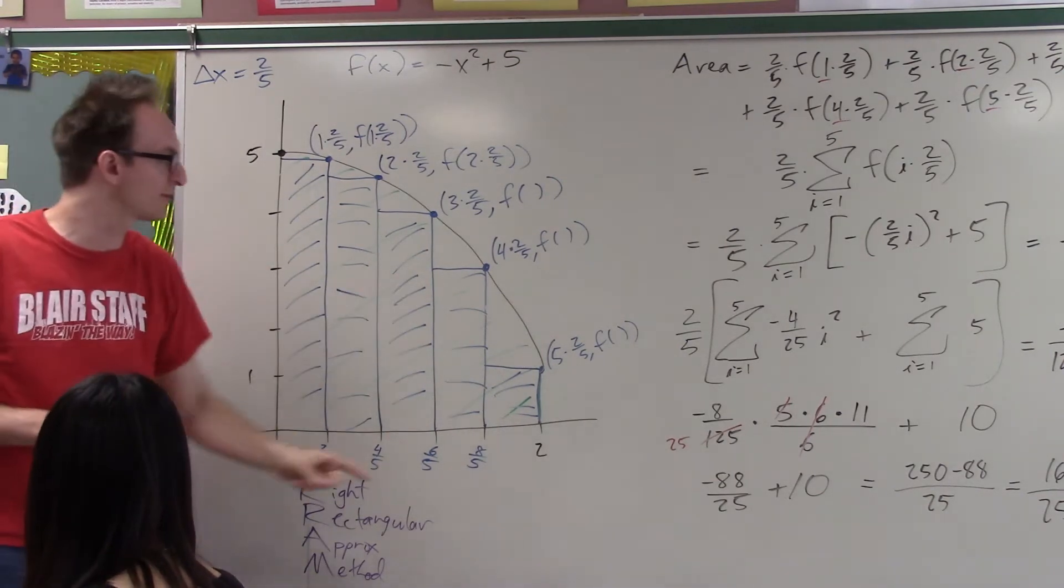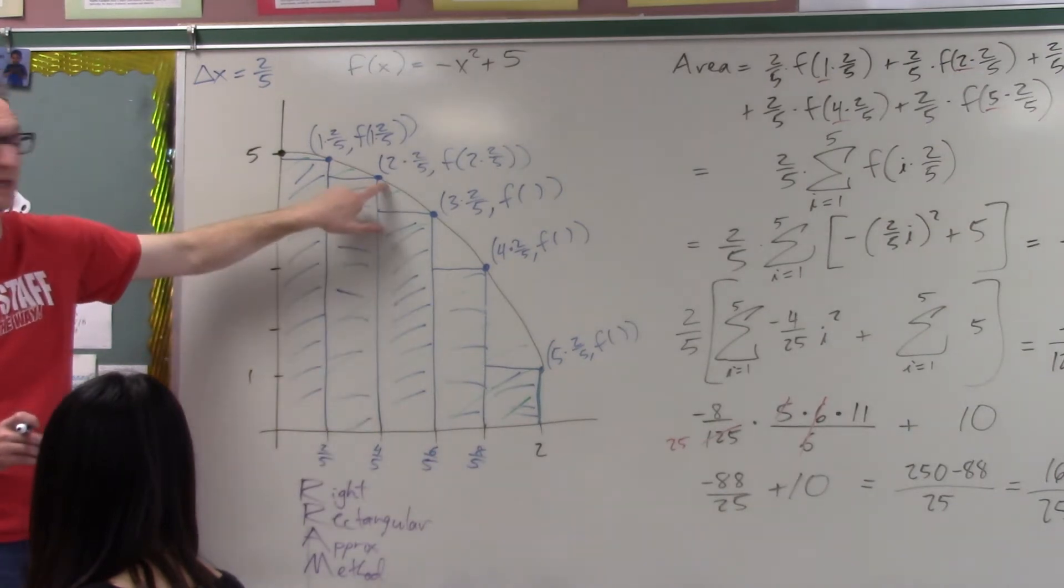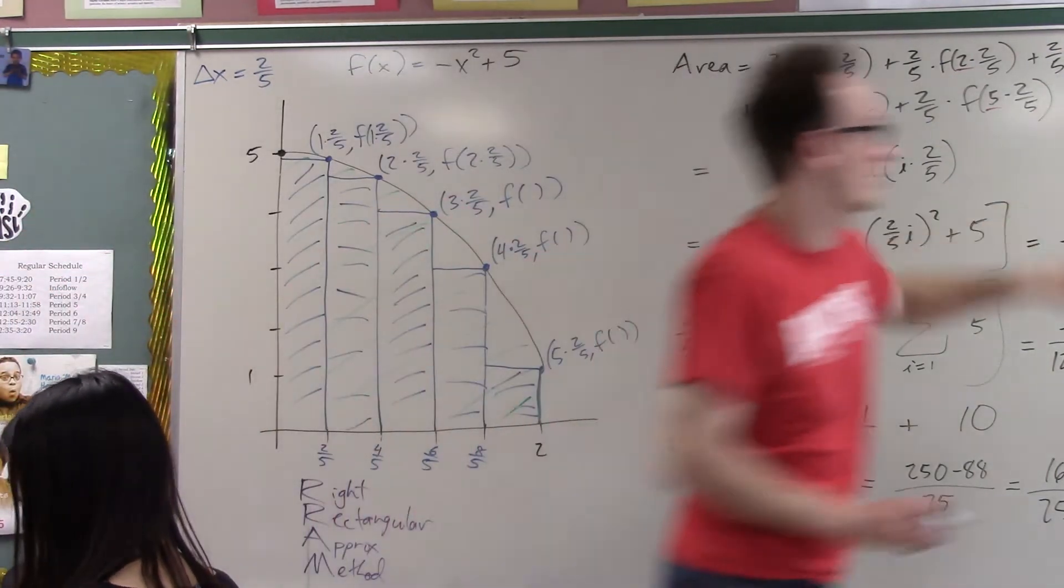It's a method for approximating the area under the curve. And it's a rectangular approximation method because we're using rectangles. The reason why we call it the right rectangular approximation method is because on each sub-interval we choose the value of the function at the right end point of that sub-interval.